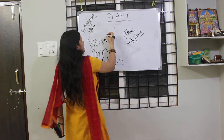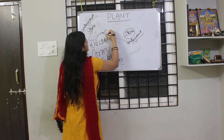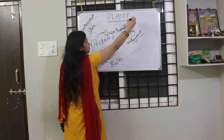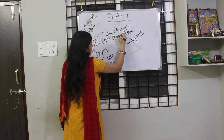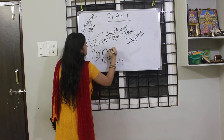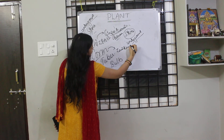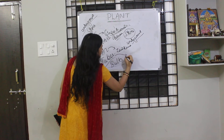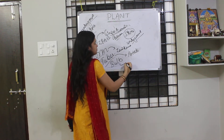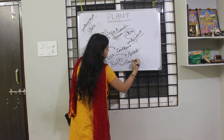What is a rhizome? Can you give me some examples? It's ginger, it's turmeric. Even banana has a rhizome — I'll tell you the difference between banana's rhizome and ginger's rhizome. For corm, one example is jimikand. For tuber, it's potato. And for bulb — it's onion and garlic.